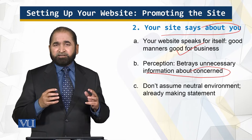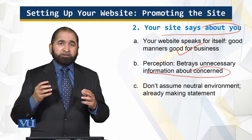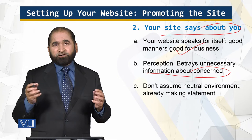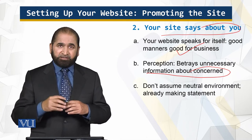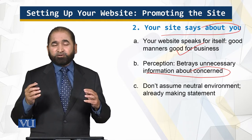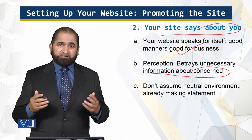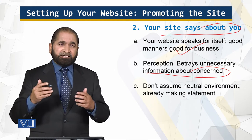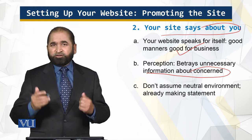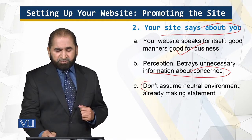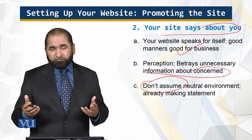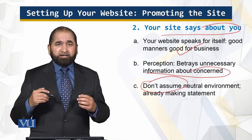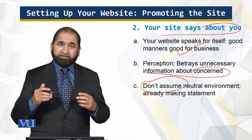Perception will convey information about your concern. For example, if you have a movie database, it will reflect upon what links are displayed — whether about minorities or nonprofit organizations. Having those links displayed can generate a certain perception which may not be good for your business. You have to be careful and don't assume that you have created a neutral environment. That is an incorrect assumption, because by the virtue of coming on the internet, you are already making a statement.